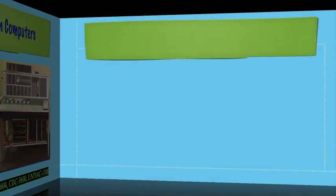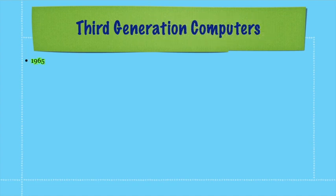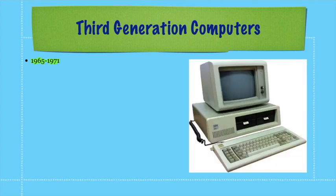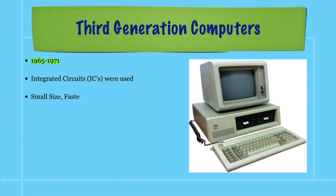Moving forward to third generation computers — the time period is 1965 to 1971. You can see in the image how much the physical appearance changed from first to third generation. Here, integrated circuits — IC chips — were used for the first time. IC chips are small in size but made computers faster than earlier generations. In one chip, many transistors and capacitors are located together, similar to what you see inside electronic gadgets like tape recorders or radios.